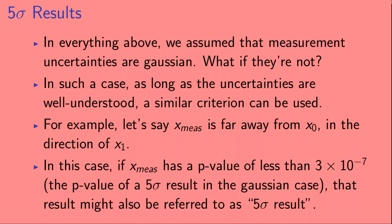Okay, let's make one more note. In everything above, we assumed that measurement uncertainties are Gaussian. What if they're not? In such a case, as long as the uncertainties are well understood, a similar criterion can be used. For example, let's say x_meas is far away from x0 in the direction of x1. In this case, if x_meas has a p-value of less than 3 times 10 to the minus 7, the p-value of a 5 sigma result in the Gaussian case, that result might also be referred to as a 5 sigma result.